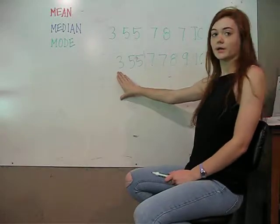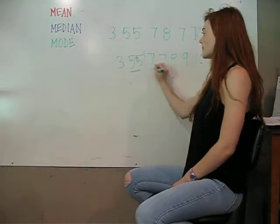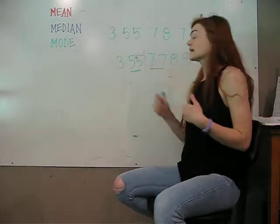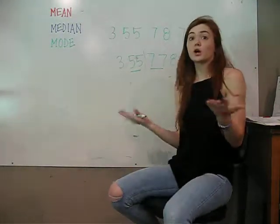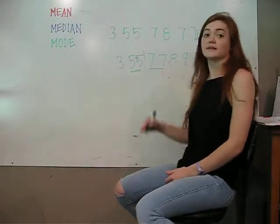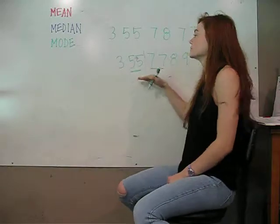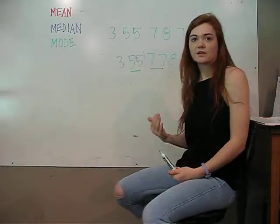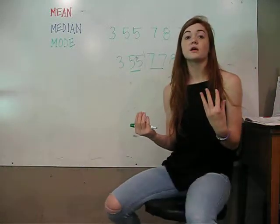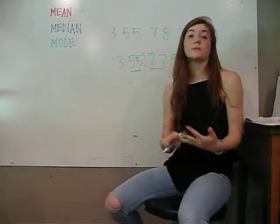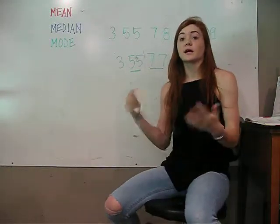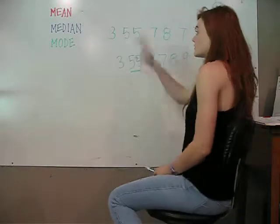You have one 3, a pair of 5s, a pair of 7s, and one each of 8, 9, and 10. So if you end up getting a pair where both occur the most, you have two modes. Both 5 and 7 are your modes — you don't pick one, unless there were another 7 or another 5. You can have two modes, three modes, four modes, however many numbers are in your set of data. And if they all have the same likelihood of occurring, then those are all your modes.